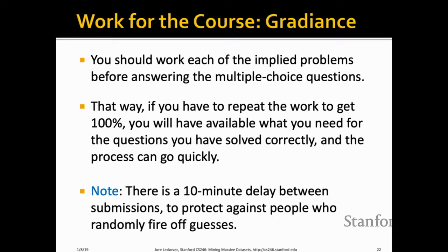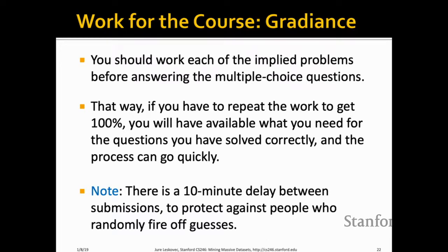There is a ten-minute delay between submissions to prevent random guessing. The best strategy is to work out each problem independently and then submit all at once, because if you get something wrong the entire quiz gets regenerated. You will get a sense it's quite cool — the technology uses finite automata to change the questions from trial to trial. The final exam date has been set: March 19, 3:30 to 6:30. We'll give extra credit up to 1% of the grade for participating in Piazza discussions, especially for answers to questions of other students and reporting bugs.